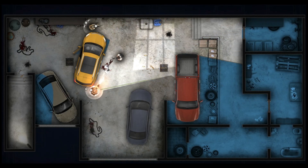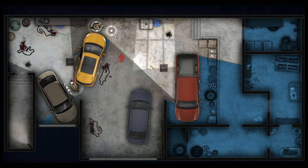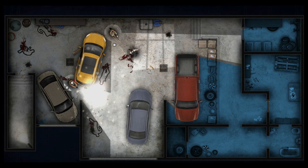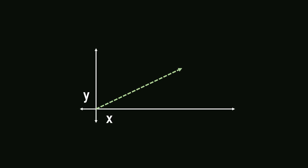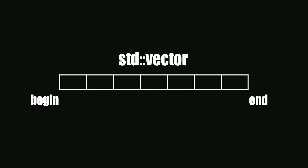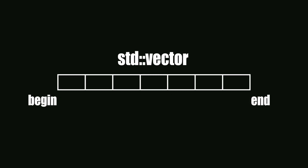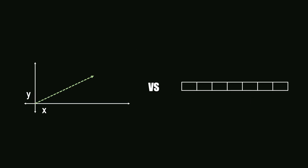A vector could mean many things. First, the easiest one to understand is vectors as coordinates. This is the kind of vector I'm going to be talking about in this video, but just in case you're confused, std::vector in C++ is a different kind of vector where you have contiguous memory blocks of a certain data type. If you don't understand what this means, I recommend watching the previous videos in this playlist.